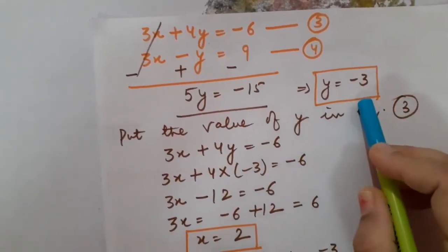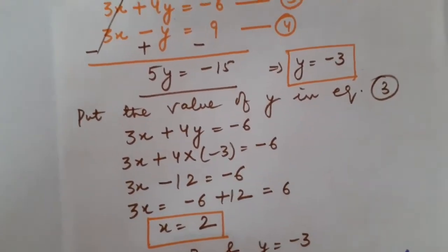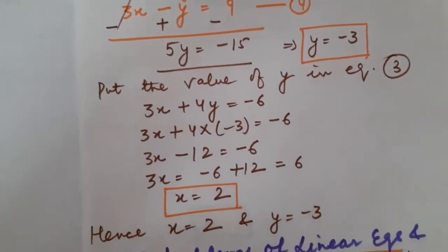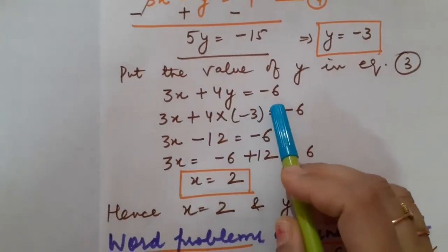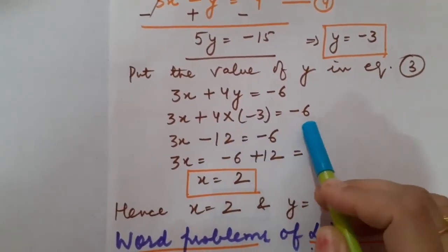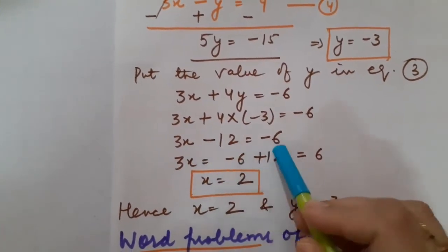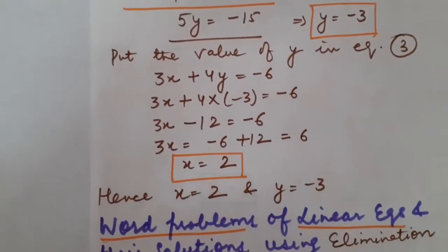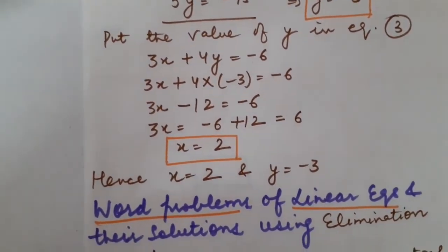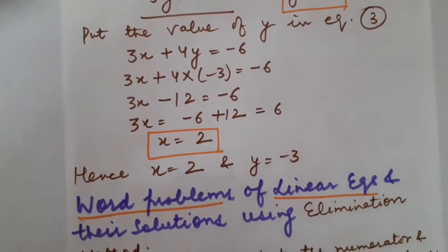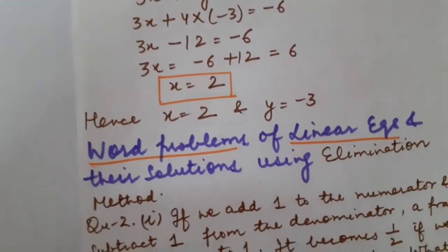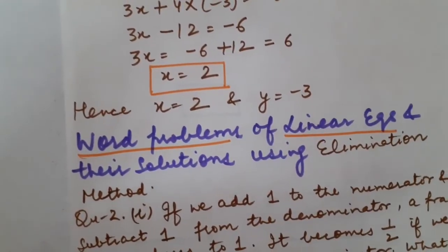So y equals minus 3. Now I am going to put the value of y in equation number 3: 3x plus 4y equals minus 6. Putting the value: 3x plus 4 times (minus 3) equals minus 6, so 3x minus 12 equals minus 6. Therefore 3x equals minus 6 plus 12 equals 6, so x equals 2. The solution of question number 1, fourth part is x equals 2 and y equals minus 3.